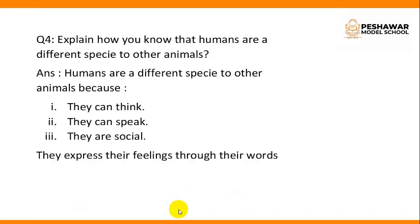Question number 4: Explain how you know that humans are a different species to other animals. Answer: Humans are a different species to other animals because humans can think, they can speak, and they are social — they express their feelings through their words. Like animals, they do not speak, they do not think, and they do not express their feelings. So human beings are a different species to other animals.